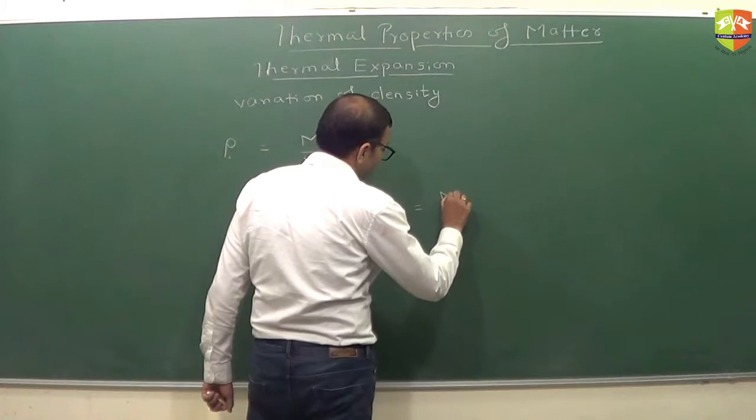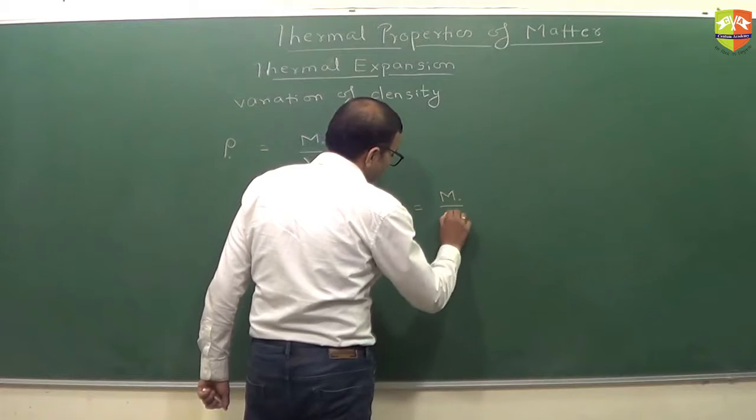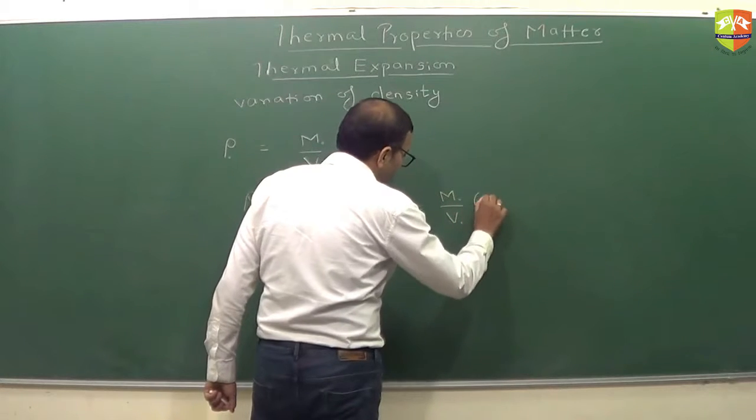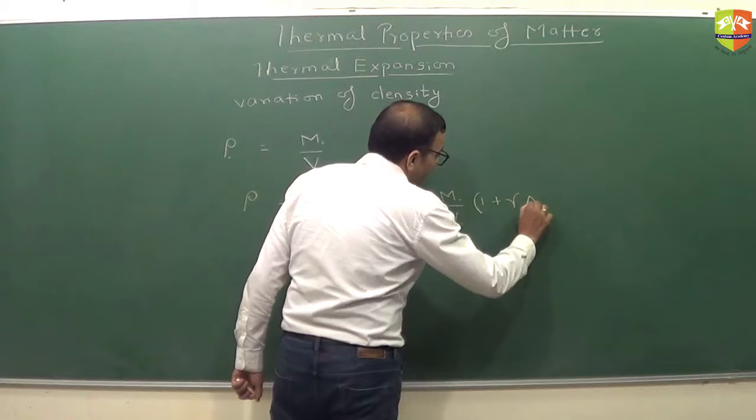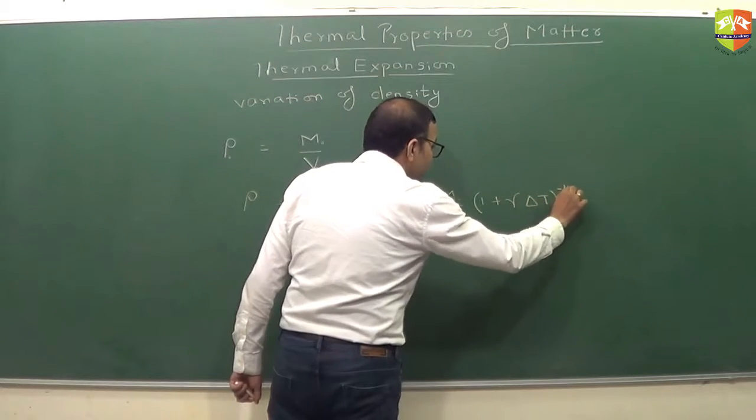This is equal to M0 by V0 times 1 plus gamma delta t raised to power minus 1.